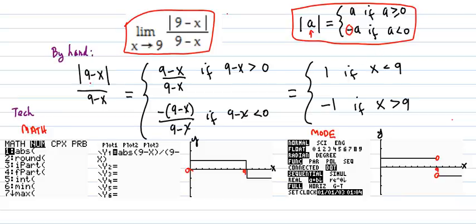So our function is absolute value of 9 minus x over 9 minus x. So where it breaks up, it'll be 9 minus x divided by 9 minus x if 9 minus x is greater than 0. Notice I didn't put the equals because we have 9 minus x in the denominator. So that would make it undefined. So it's just greater than strict.